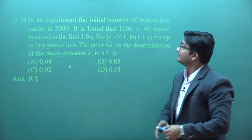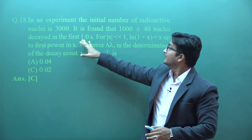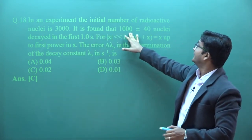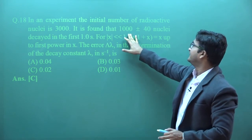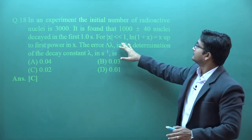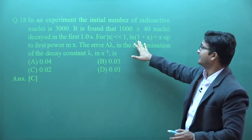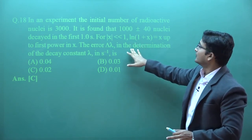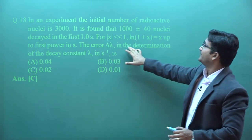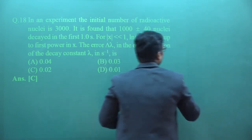The next question: in an experiment, the initial number of radioactive nuclei was 3000. After 1 second, approximately 1000 nuclei decayed. The uncertainty in this measurement is δN = 40 nuclei. We need to find the error δλ in the decay constant λ.